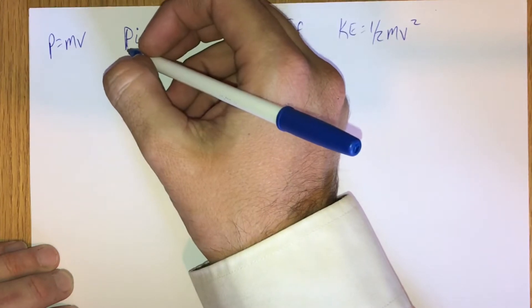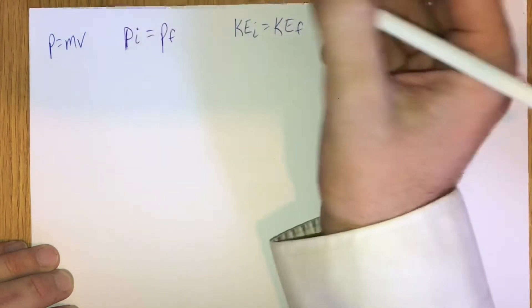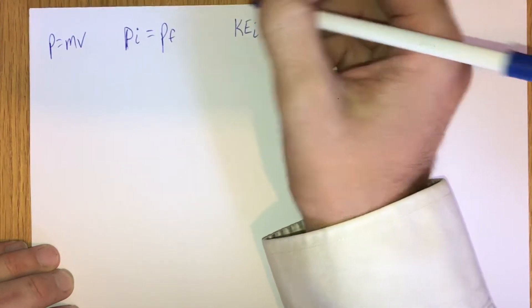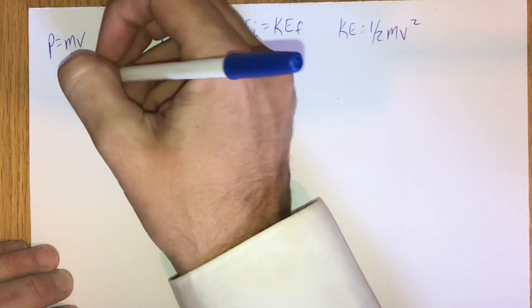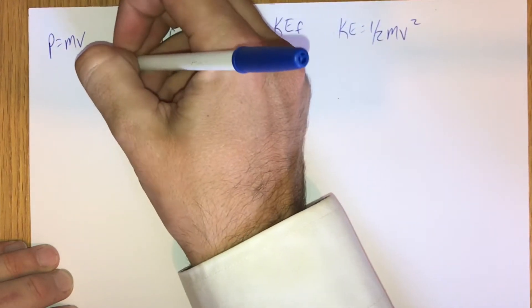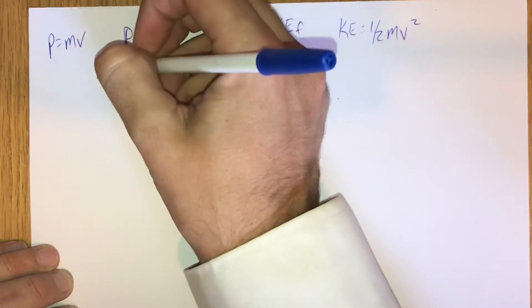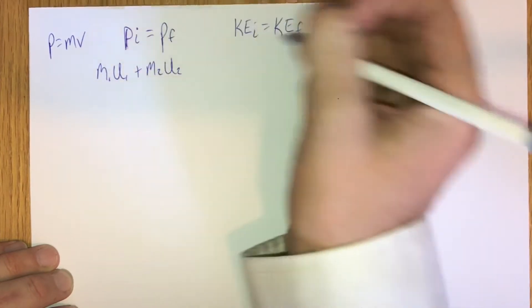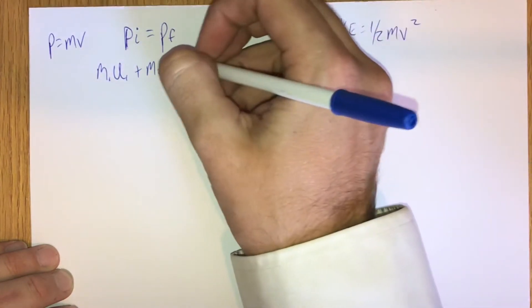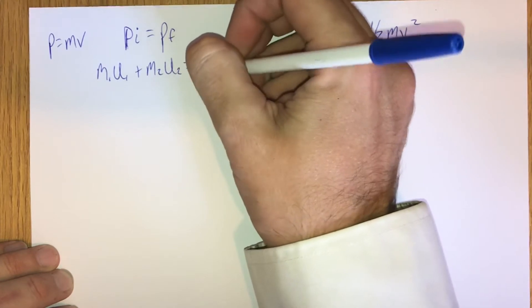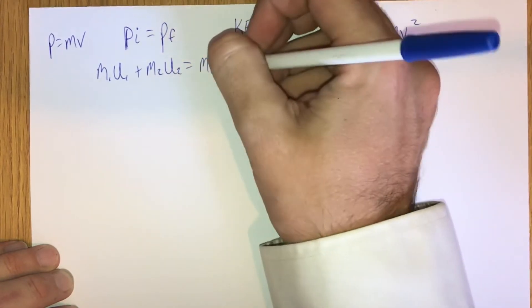Let's consider the case of two massive objects, M1 and M2, colliding. M1 has an initial velocity U1, and M2 has an initial velocity U2. They collide, and so the final momentum terms are M1 V1 and M2 V2.